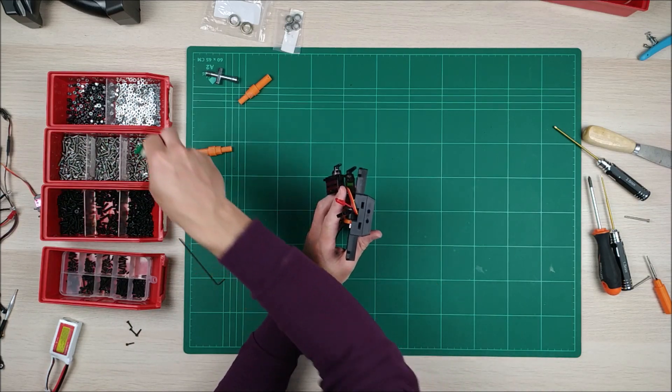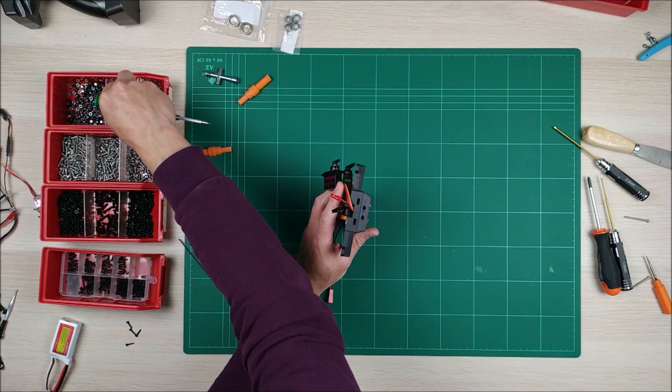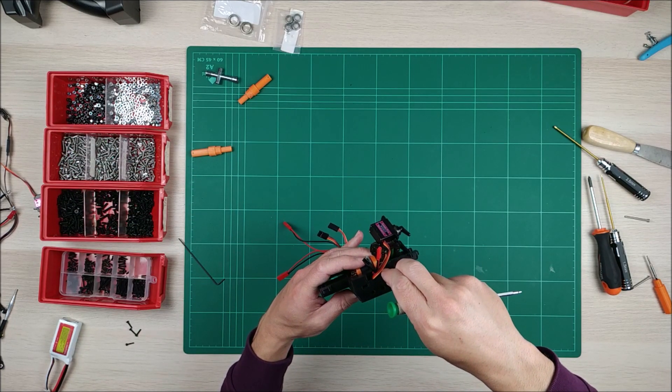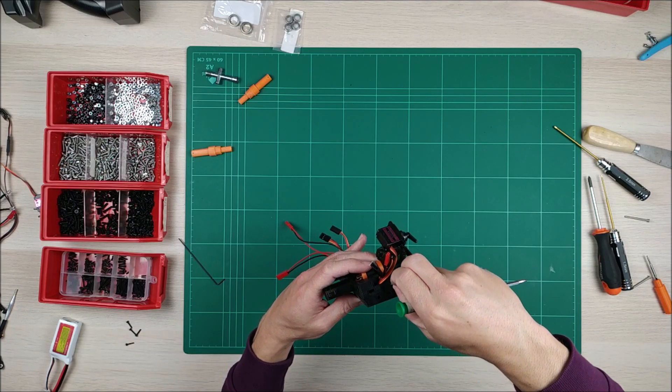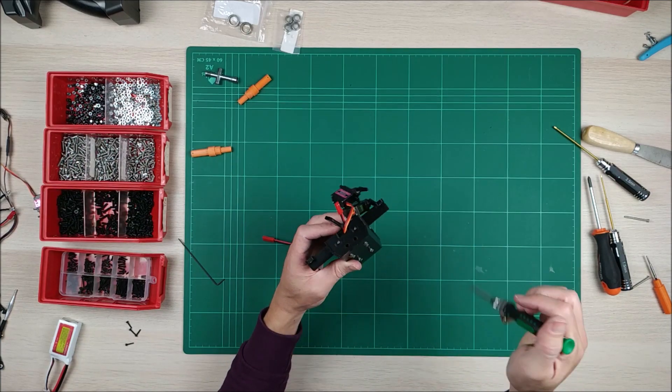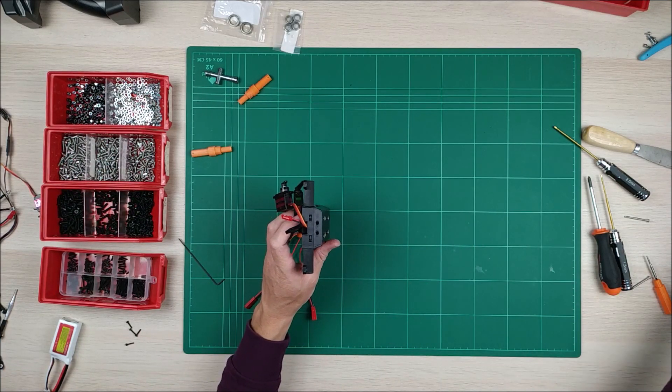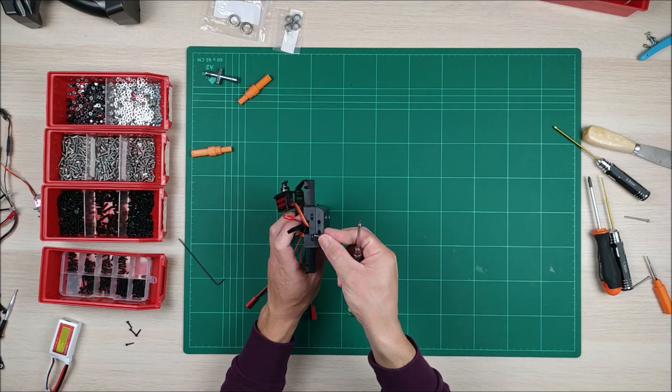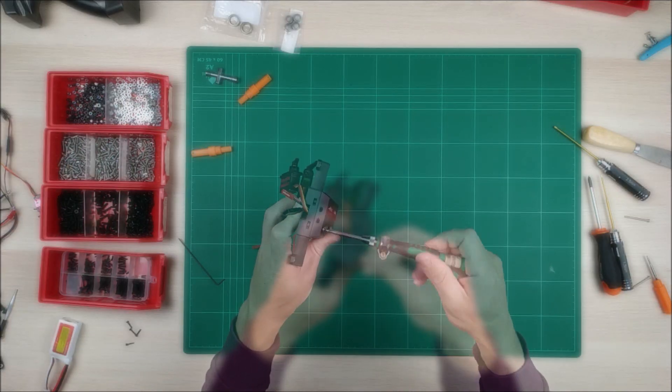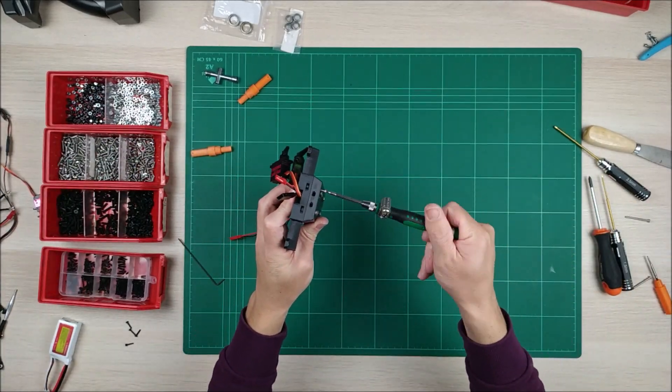We also have these two ones here. We need to insert one nut here and another one here. And then here also M3 16 millimeters, as you can see.